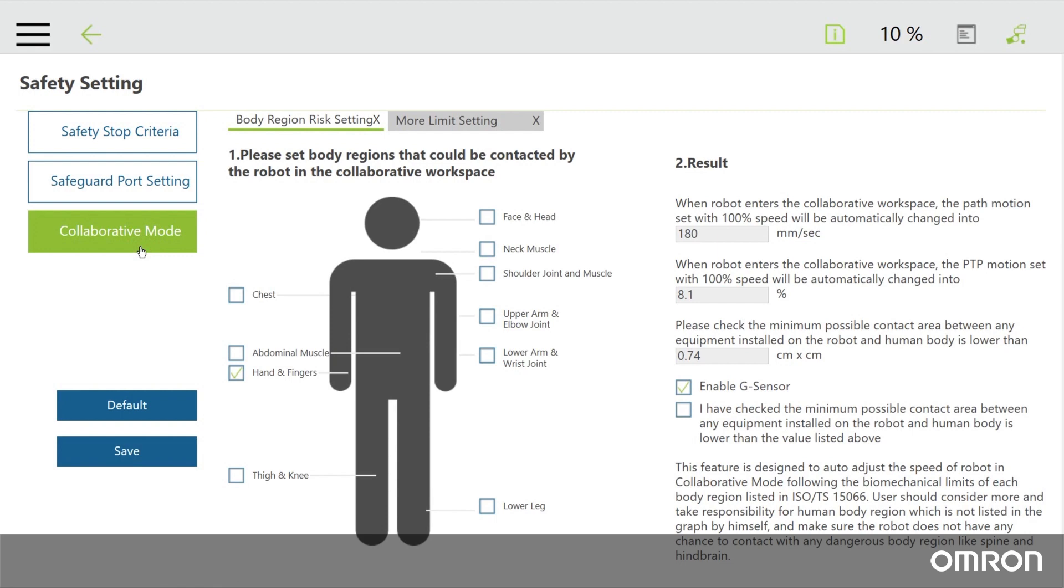The first part is called the body region risk setting. Click any of the body regions that are most likely to come into contact with the cobot if a person steps into the work area.